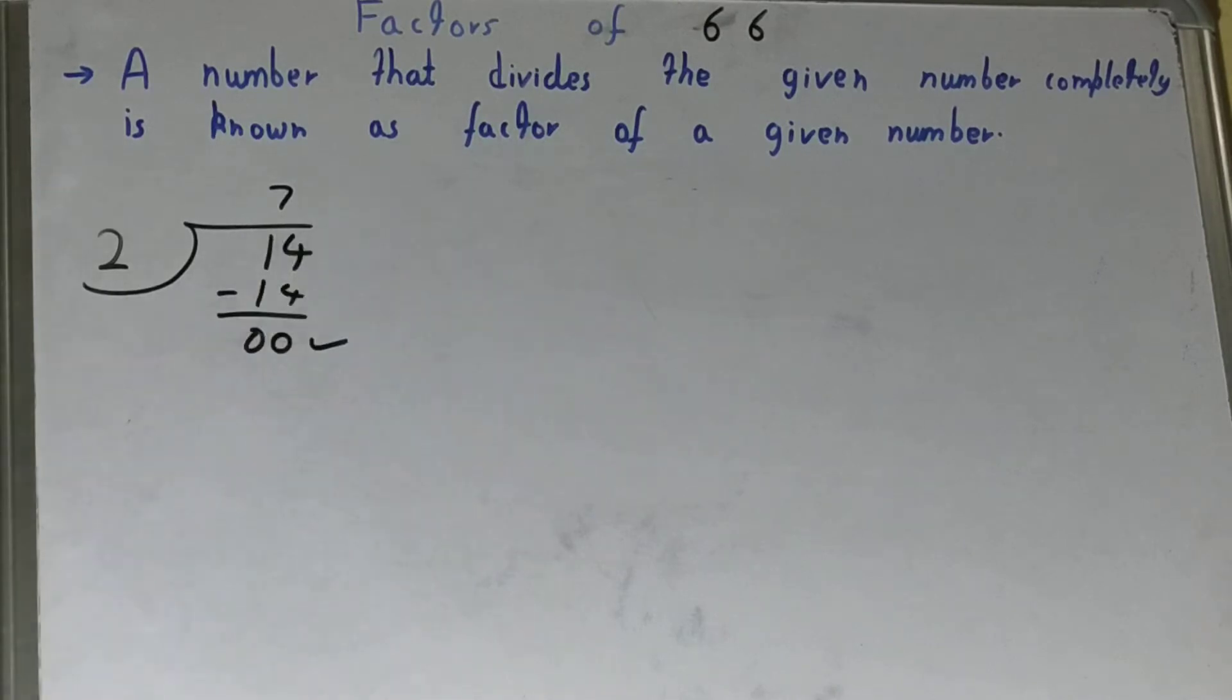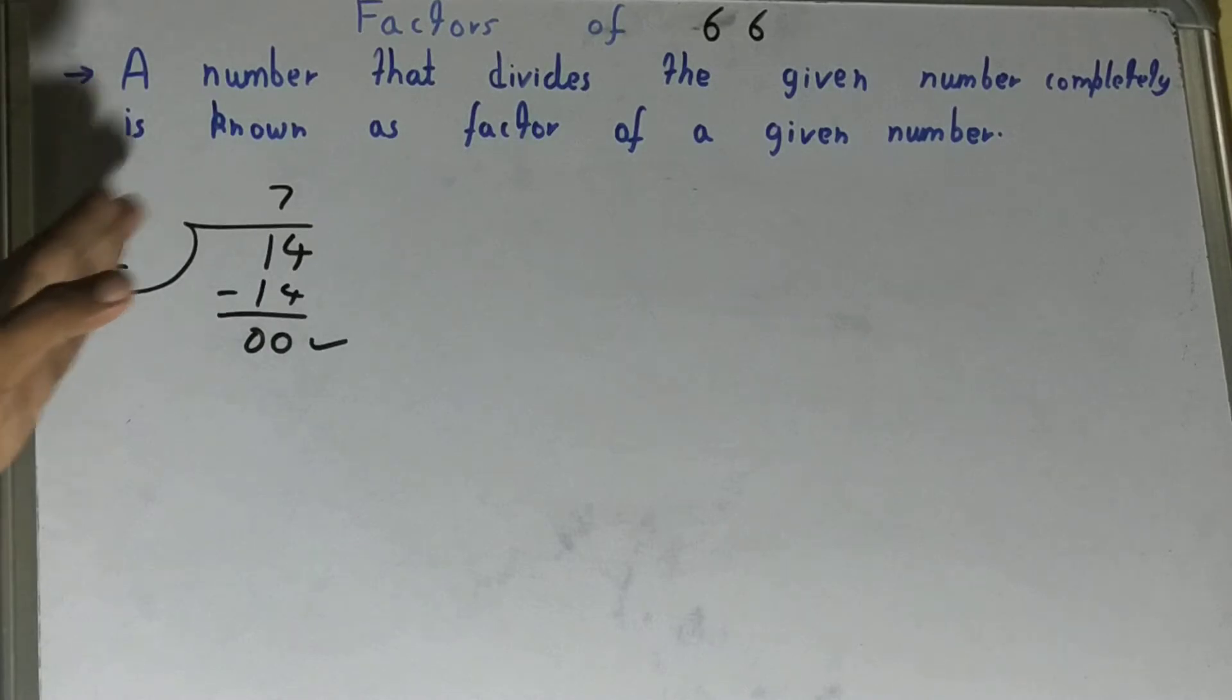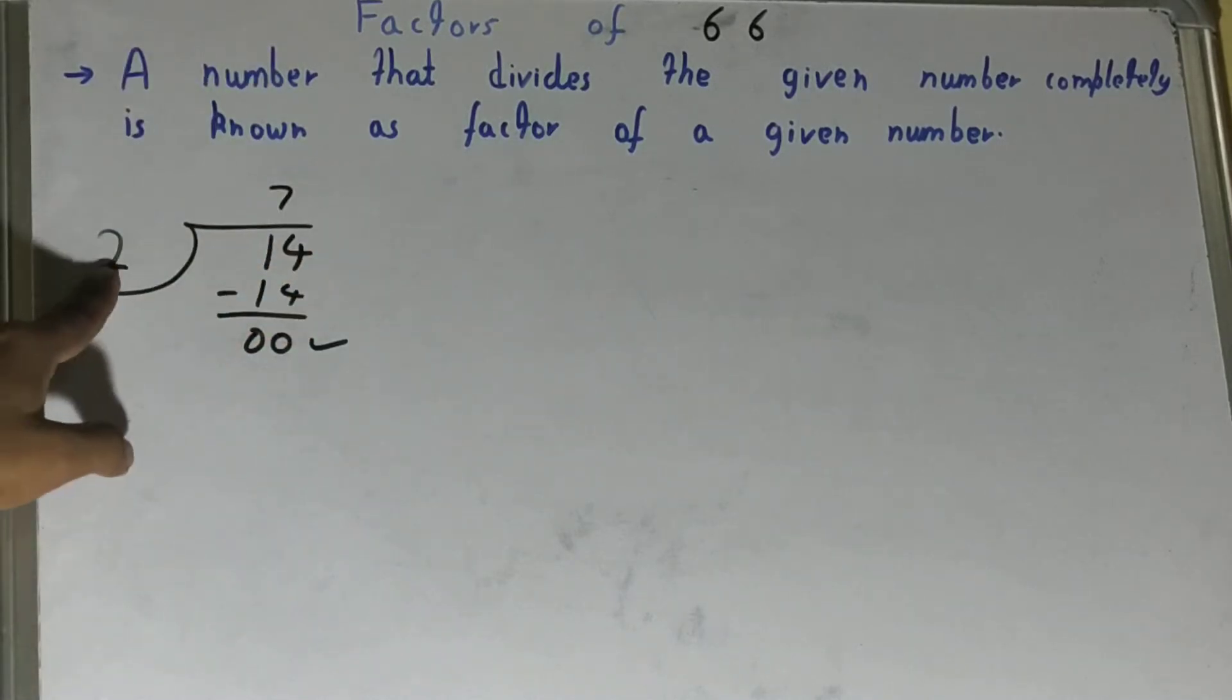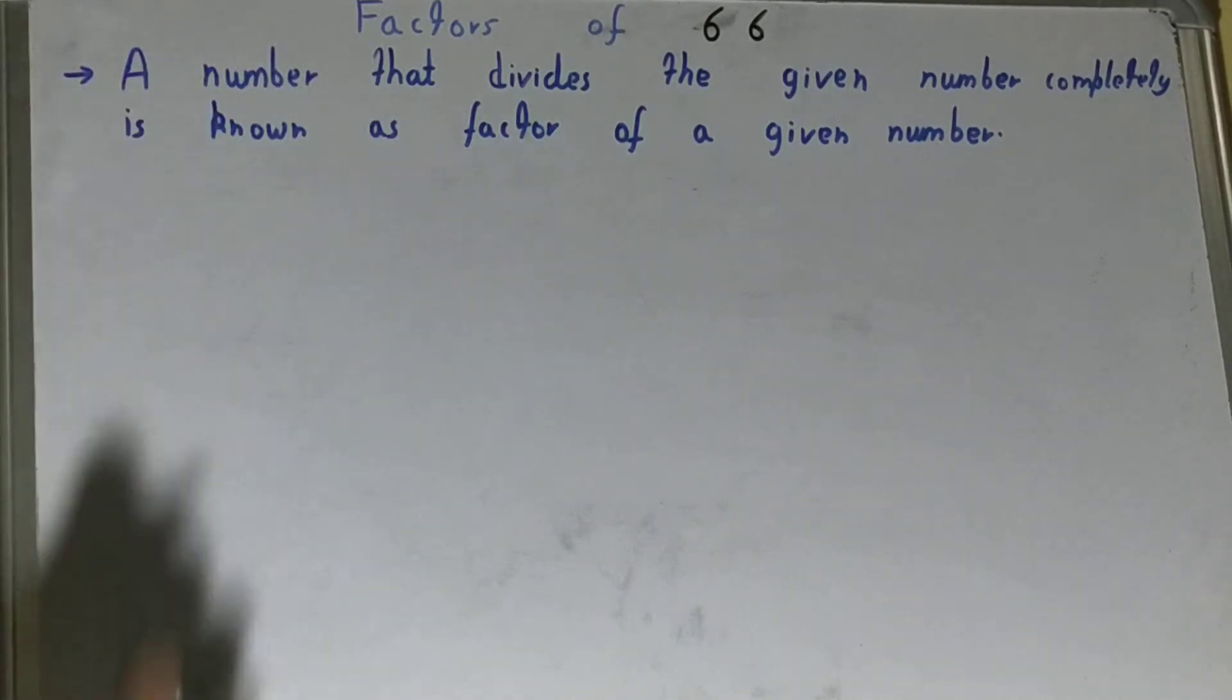When you divide it, you will get the remainder zero. If and only if you get the last remainder zero, then you can call that number a factor of the given number. In this case, 2 is a factor of 14. If you don't get the remainder zero, then that number is not a factor. That's the basic idea behind finding factors.